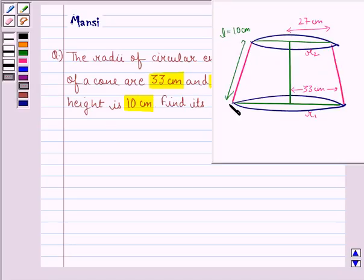So, let this be the solid frustum of cone, then the radii are given to be 33 cm and 27 cm, slant height is 10 cm.